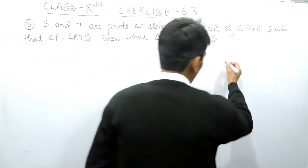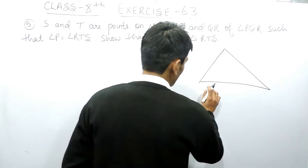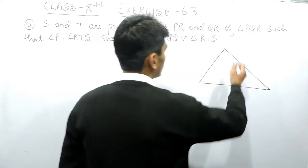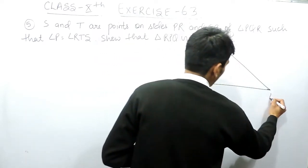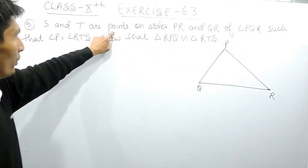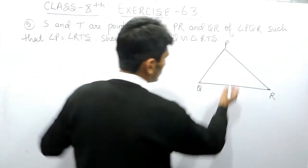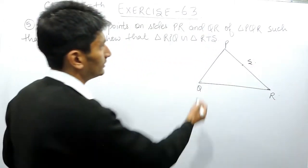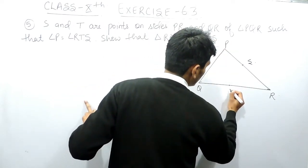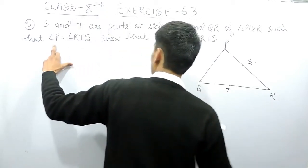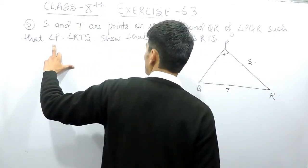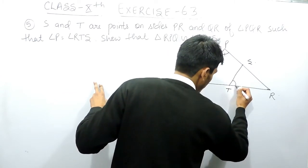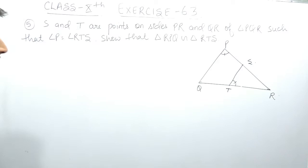So here the triangle is given to you — this is triangle PQR. S and T are points on side PR and QR respectively. So on PR there is a point S, and T is the point on side QR, such that angle P equals angle RTS. So these two angles are given to you as equal.